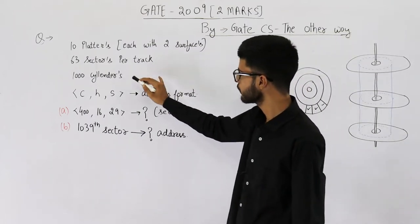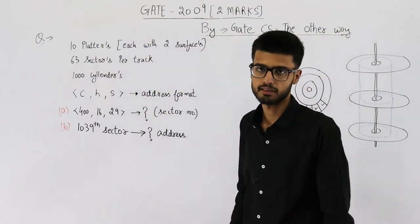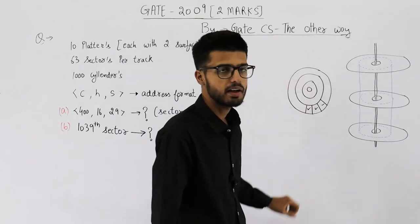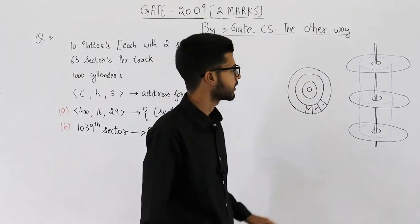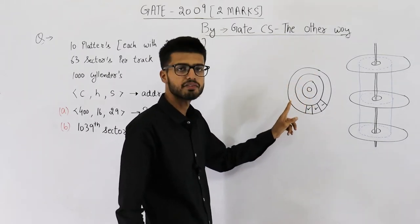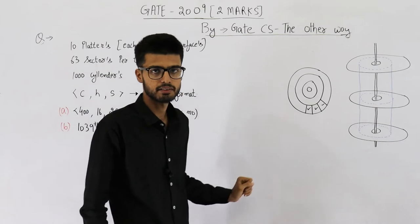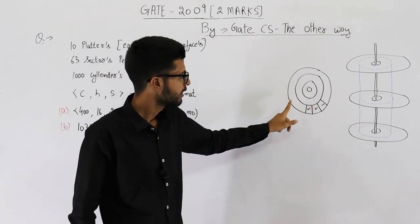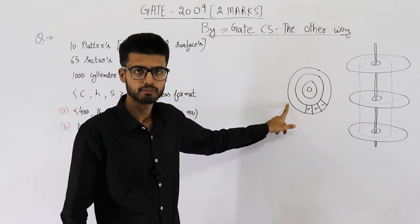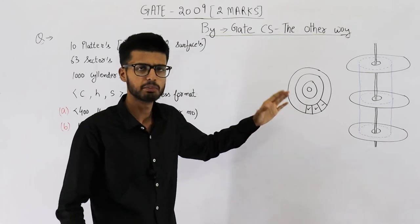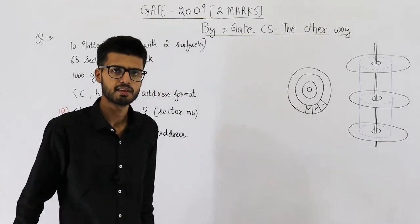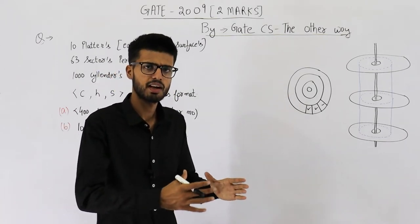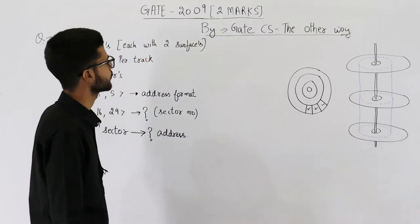We have 1000 such cylinders. This also means each and every platter has 1000 different tracks. The 0th track and the 1000th track each belong to a different cylinder — the outermost cylinder, the innermost cylinder, and so on.